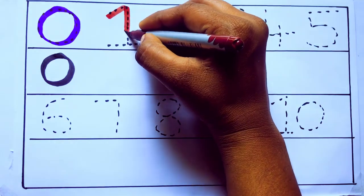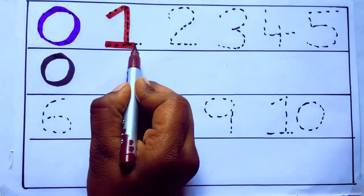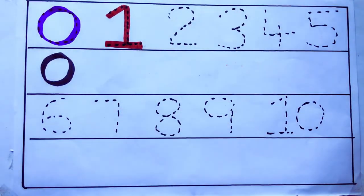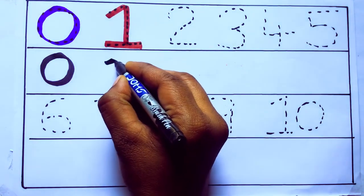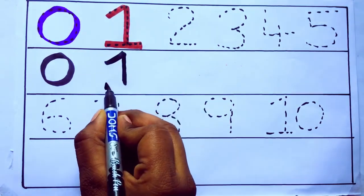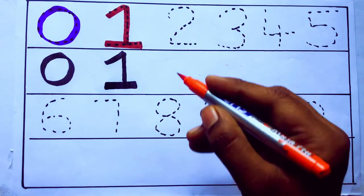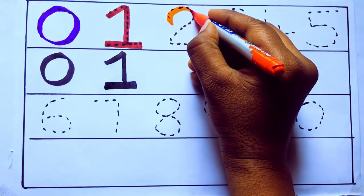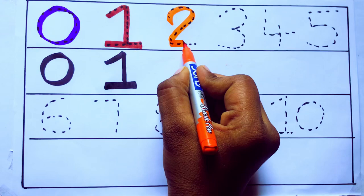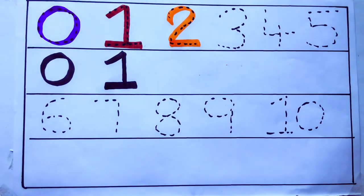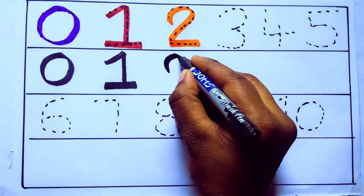1, one, number one. Orange color, two, T-W-O, two. Number 2.